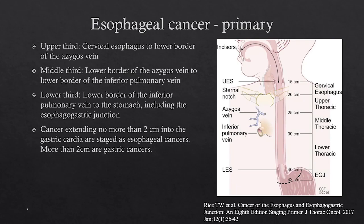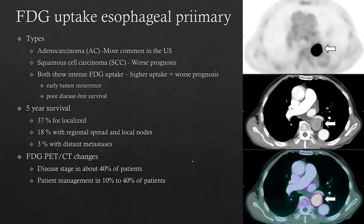Moving on to esophageal cancer. The esophagus goes from the upper esophageal sphincter to within 2 cm of the gastroesophageal junction, and anything in this range is considered esophageal cancer. There are two types: adenocarcinoma and squamous cell carcinoma. Both show intense FDG uptake, and typically the higher the uptake, the worse the prognosis, with higher uptake associated with early tumor recurrence and poor disease-free survival. Five-year survival is around 37% for localized disease, 18% for regional spread, and 3% with metastases.